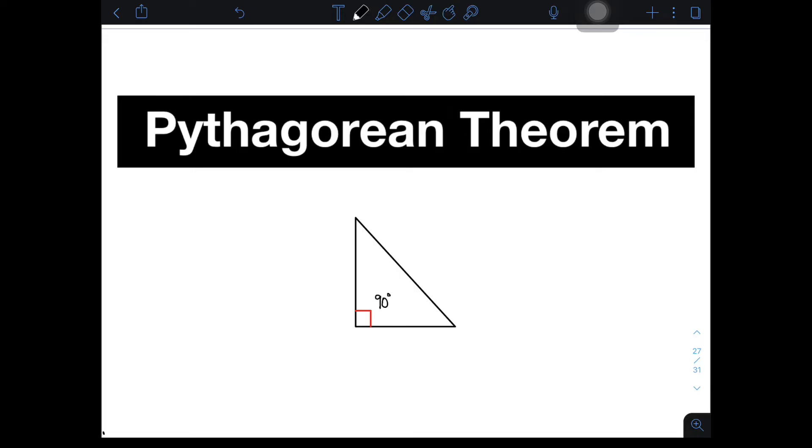Now, let's go with the different parts or the sides of a right triangle. Ang mga sides ng isang right triangle ay meron tayong dalawang legs. This is your leg number one and leg number two. And then, after that, the third side is considered as the longest side of a right triangle, which is opposite to your 90 degree angle. Ito yung taintawag nating hypotenuse.